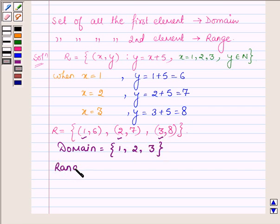And range will have all those elements which are second in these ordered pairs so that elements are 6, 7 and 8.